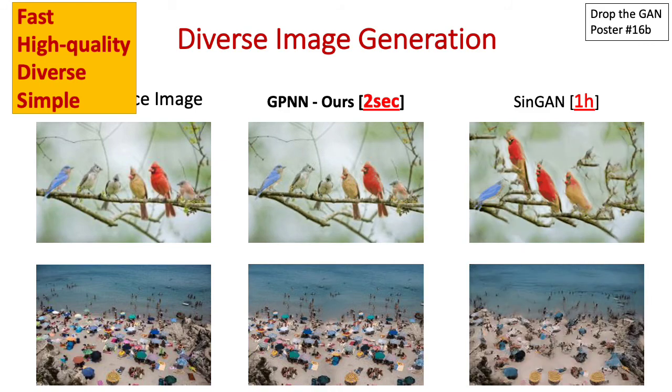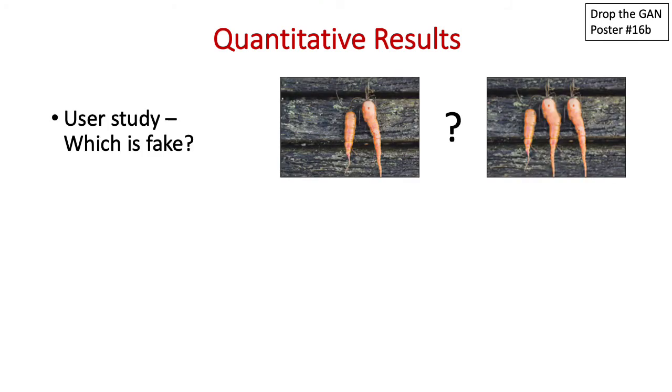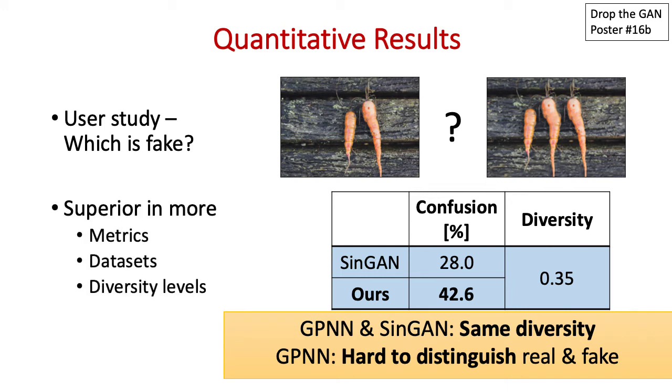Please note the crisp output images compared with SinGAN. To quantify this, we conducted a user study where workers had to choose the fake image. Our output images have the same diversity as SinGAN, but are nearly indistinguishable from real images. This superiority holds in more metrics, datasets, and diversity levels.